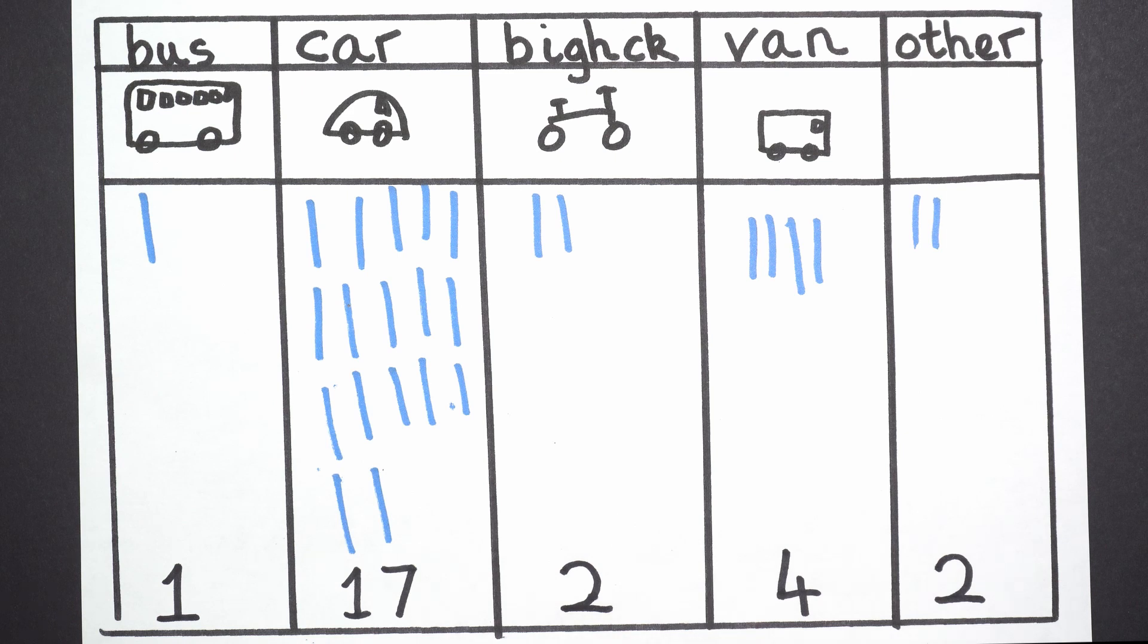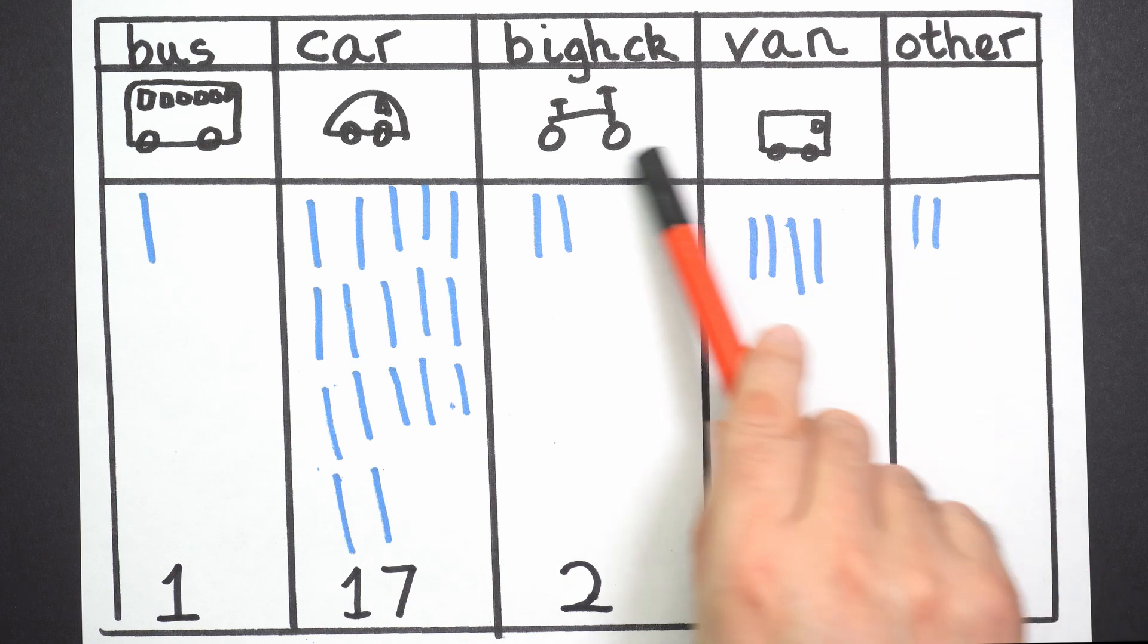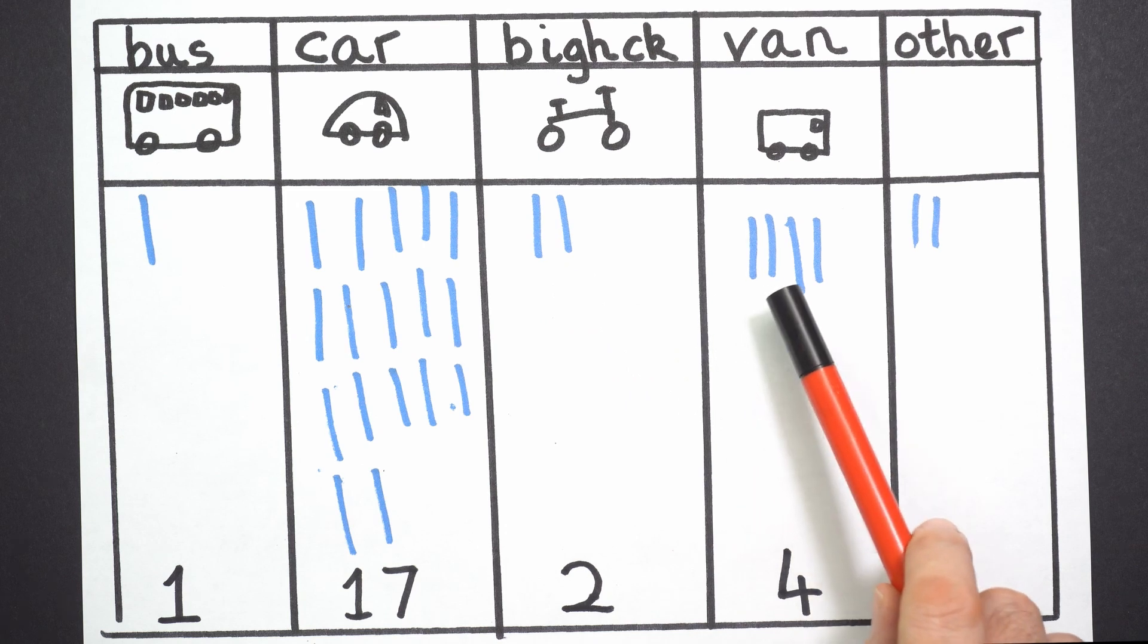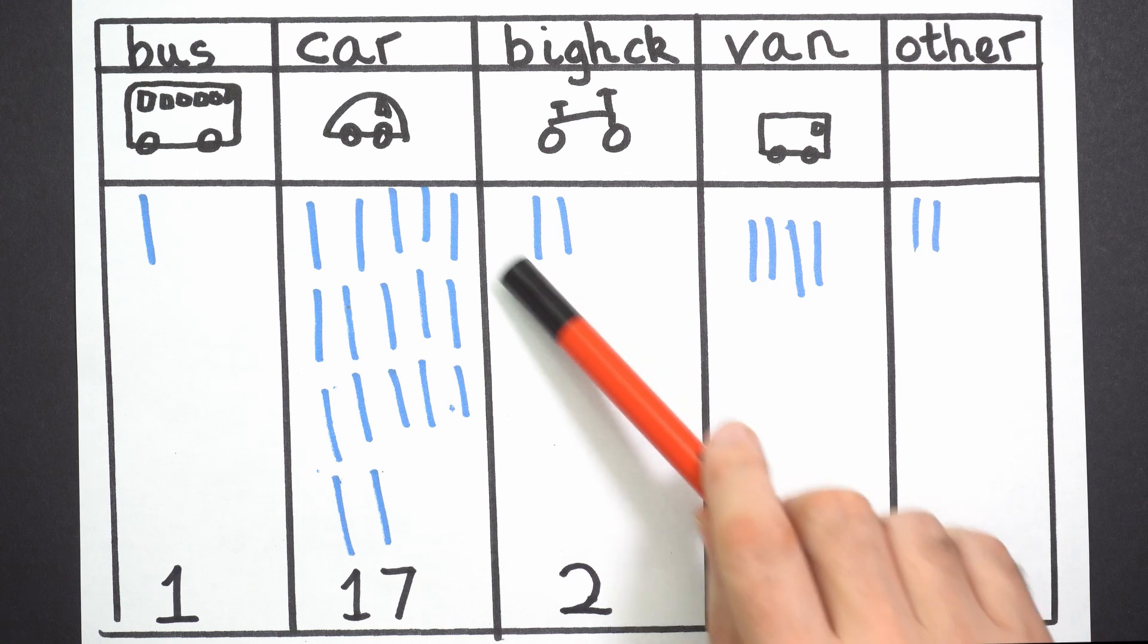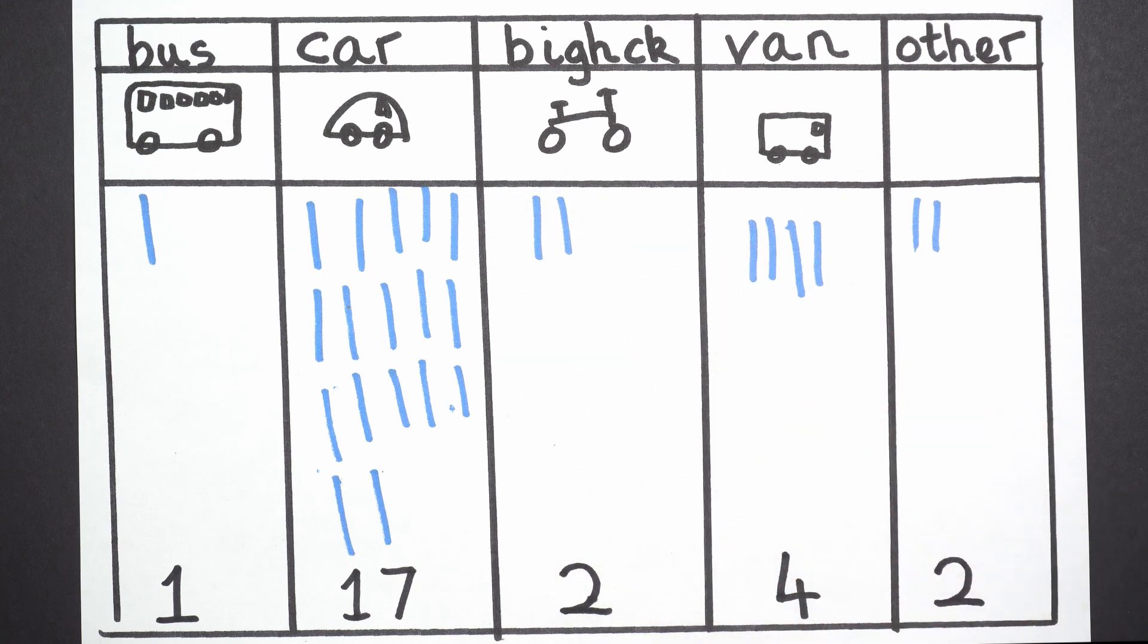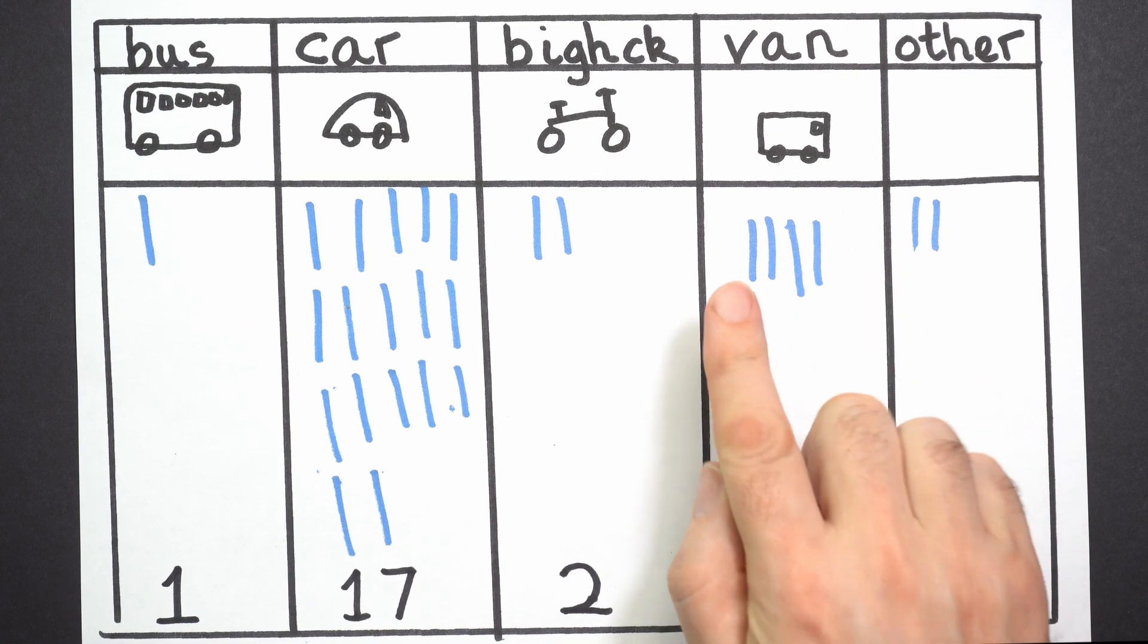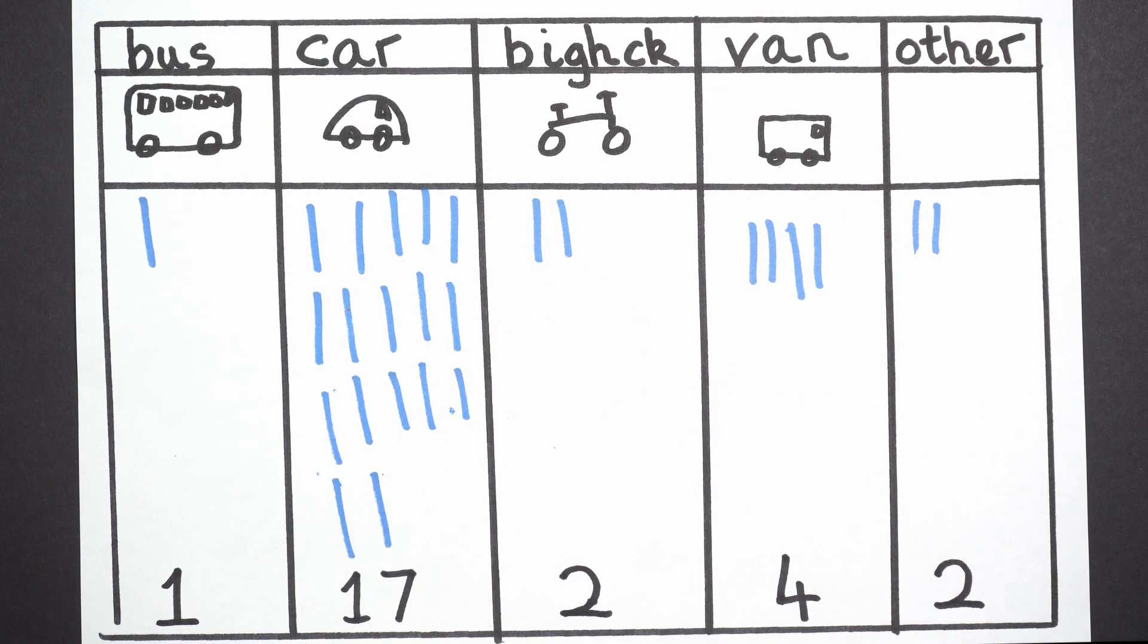And my last question was how many bikes and vans were there altogether? Well, let's see. I've got bikes here and vans here so I need to count all of the lines. So I could do it like this. One, two, three, four, five, six. Or I could do it by counting on. Which is the biggest number? Is it two or four? Four. So I get four in my head and then I don't need to count those. And I count on from four. What's one more than four? Five, six. So either way we get to six.